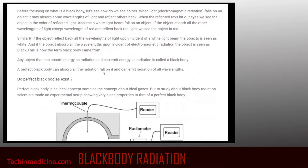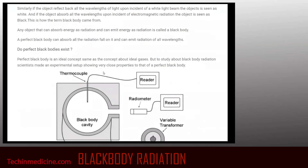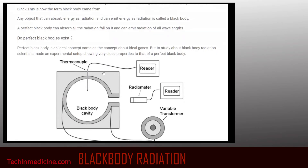Any object that can absorb energy as radiation and emit energy as radiation is called a black body. A perfect black body can absorb all radiation that falls on it and emit radiation of all wavelengths. In real life, there are no perfect black bodies — it is an ideal concept, similar to ideal gases. But to study blackbody radiation, scientists made an experimental setup showing properties very close to those of a perfect black body.